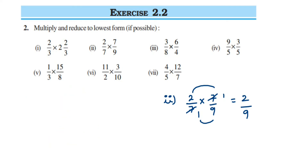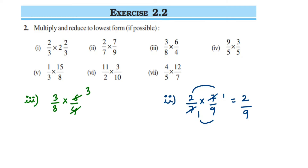Third question: 3/8 multiplied by 6/4. Here we can cancel. We can cancel 6 and 4 in the 2 table: 2 × 3 = 6 and 2 × 2 = 4. We cannot cancel further, so multiply the numerators: 3 × 3 = 9, and the denominators: 8 × 2 = 16. The answer is 9/16.